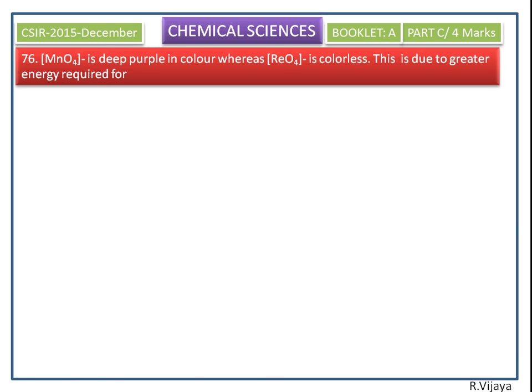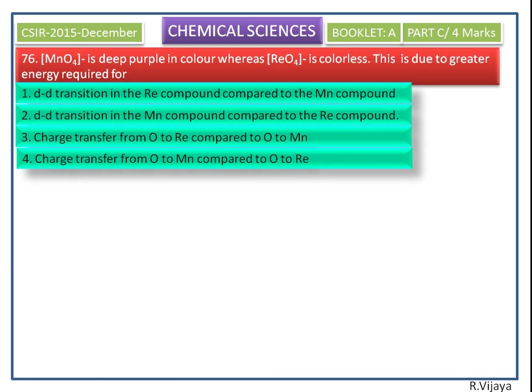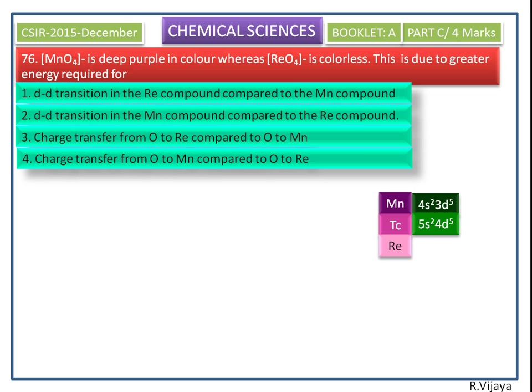Permanganate is deep purple in color whereas perrhenate is colorless. This is due to greater energy required for — the options are shown here. In the periodic table, manganese, technetium, and rhenium are in the same column.